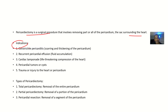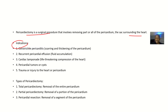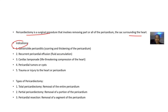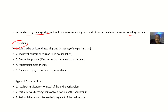For indications: if a patient has constrictive pericarditis, there is inflammation of the pericardium. As the pericardium is inflamed, it starts constricting the heart. The pericardium becomes damaged and cannot be repaired, so when there is constrictive pericarditis — which involves scarring and thickening of the pericardium — the best option is to remove the whole thing.